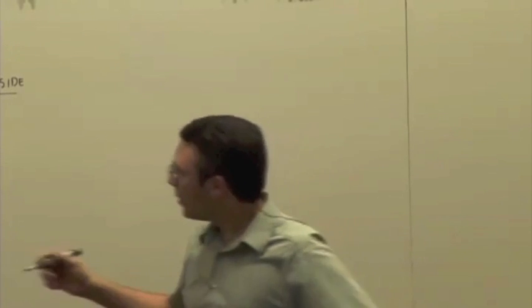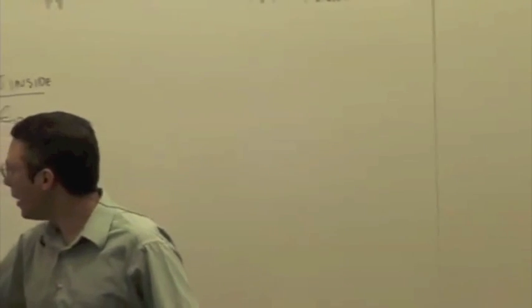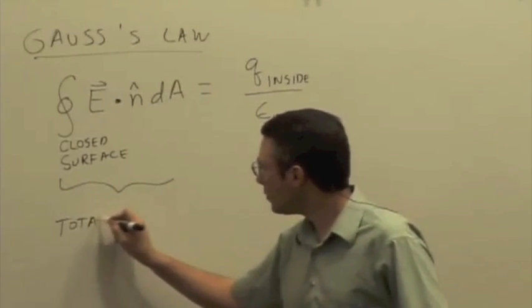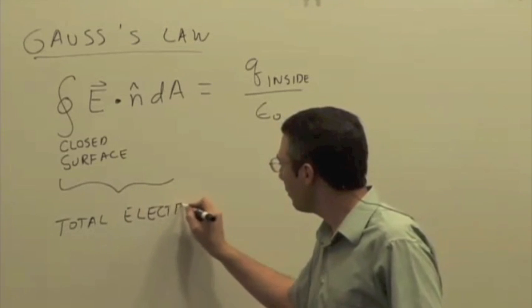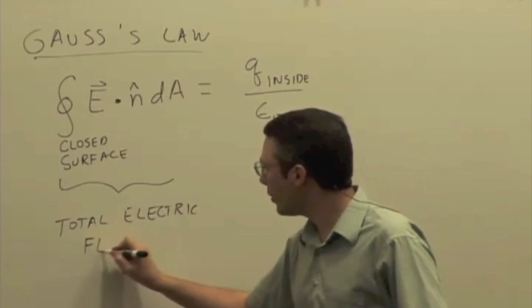We also used round-trip potential difference in that proof as well. There's a more formal proof in the book if you want to take a look at that. And, by the way, this thing is called the total flux over a closed surface.